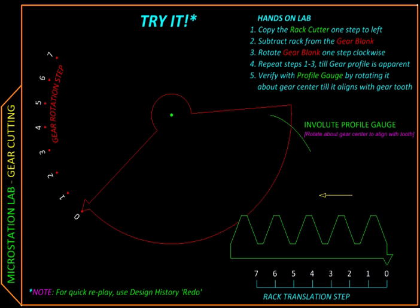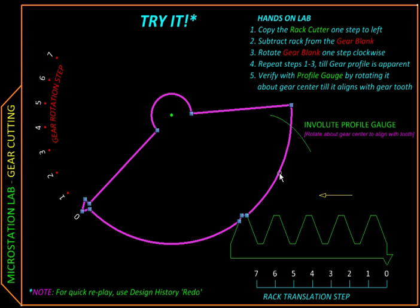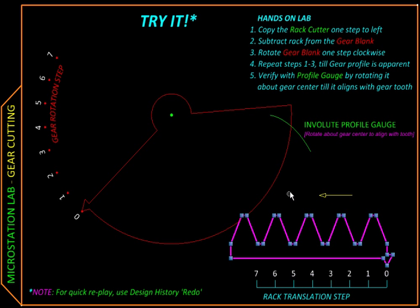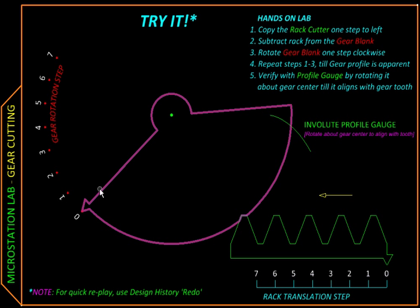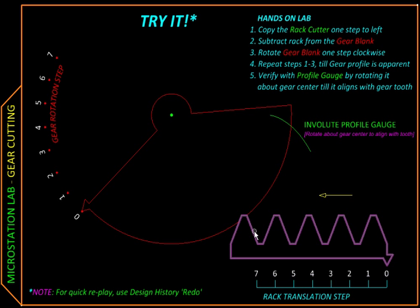Let us simulate that process. Here is a gear blank or a metal disc, and this is the involute rack. We will be giving a step-by-step rotation to the gear blank and we will be giving a proportionate translational motion to the rack. And whenever they overlap, we will be removing that area.